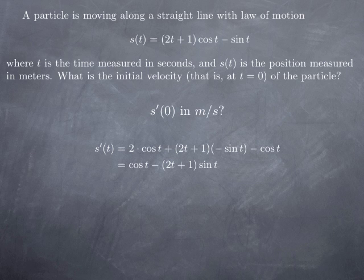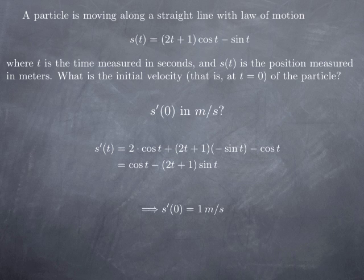What we're looking for is not this function as a function of t, but its value for t equals 0. We plug in t equals 0: we obtain cosine of 0, which is 1, minus 2 times 0 plus 1, that's 1, times sine of 0, which is 0. In other words, the initial velocity is 1 meter per second.